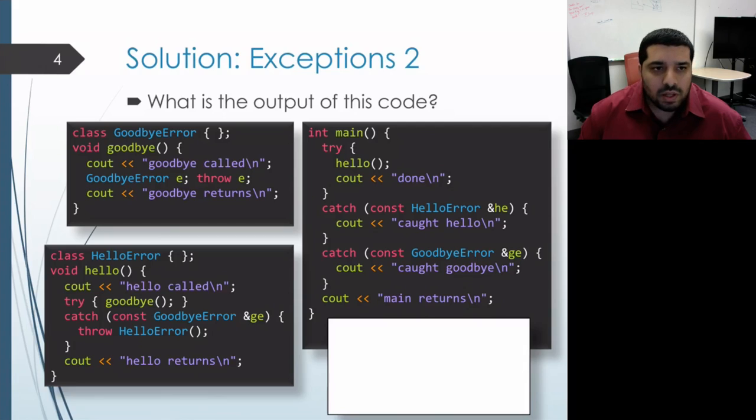Alright, as is usual with exceptions, what I like to do is draw out the call stack just to keep track of what functions are called when. So when this code starts, it's going to call main. So we'll get an activation record for main on our call stack.